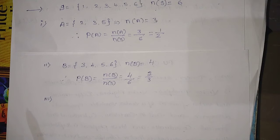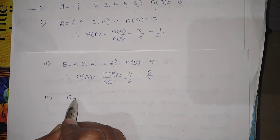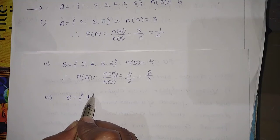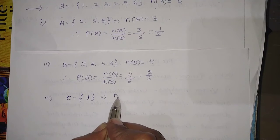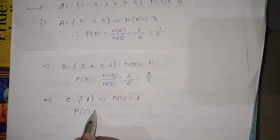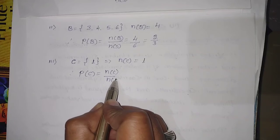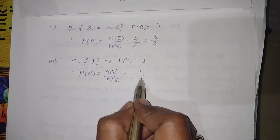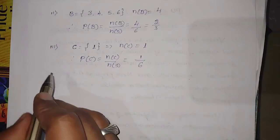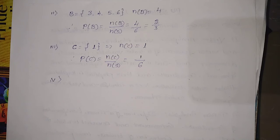Third question — a number less than or equal to 1 will appear: C = {1}, so n(C) = 1. P(C) = n(C) / n(S) = 1/6.